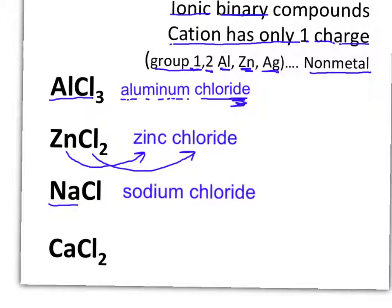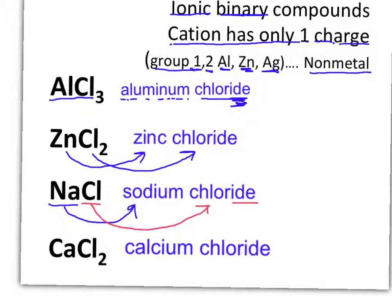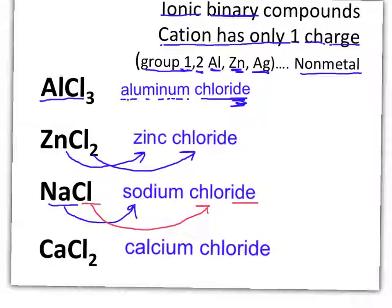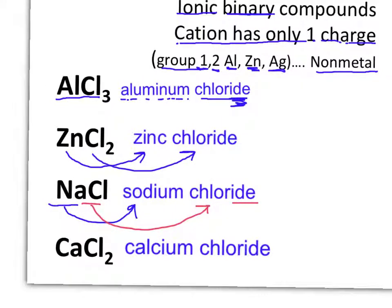We've written the name of the cation and the name of the anion changing the ending to -ide: sodium chloride. And for our final example from group two, we have calcium for the cation and the anion, once again, being chloride.